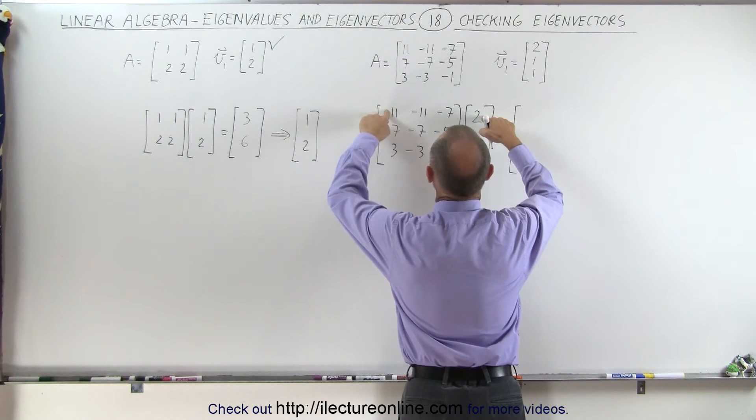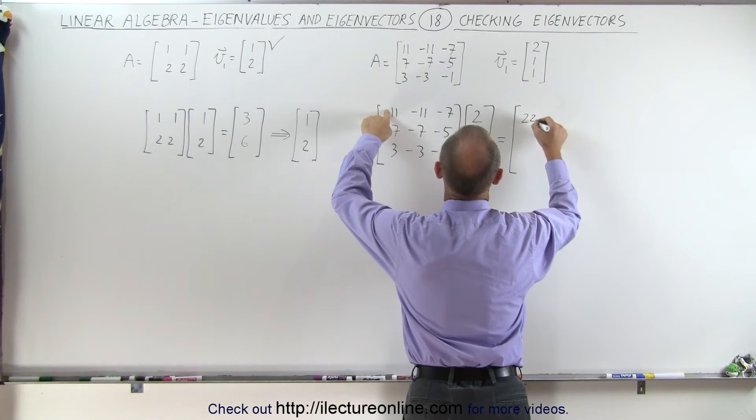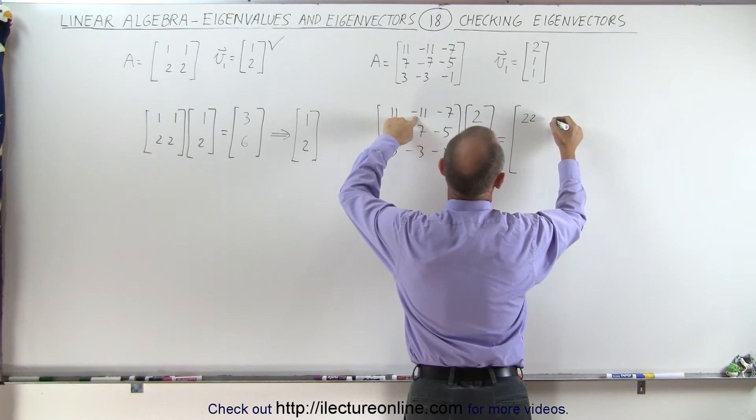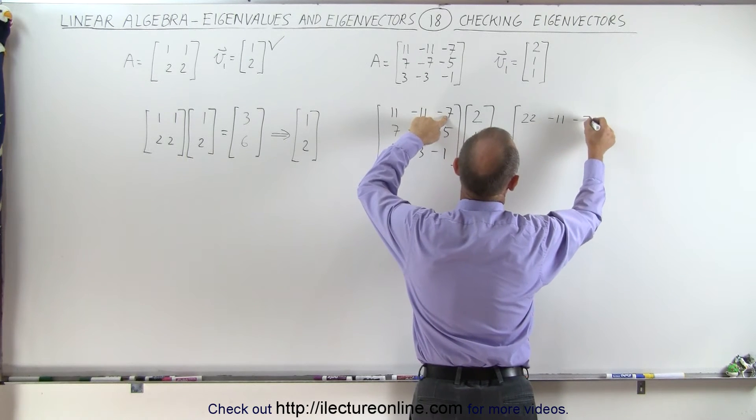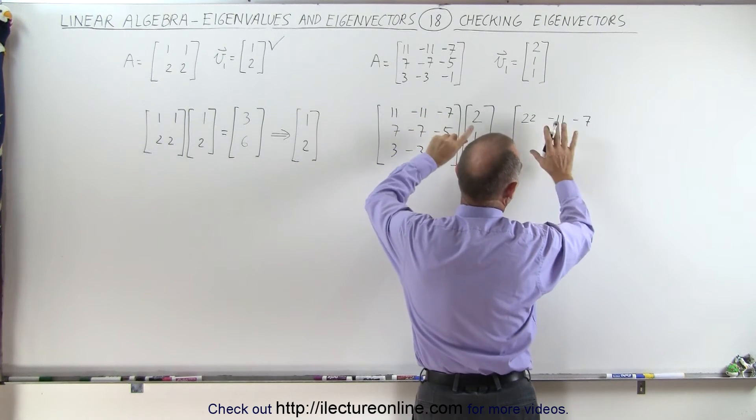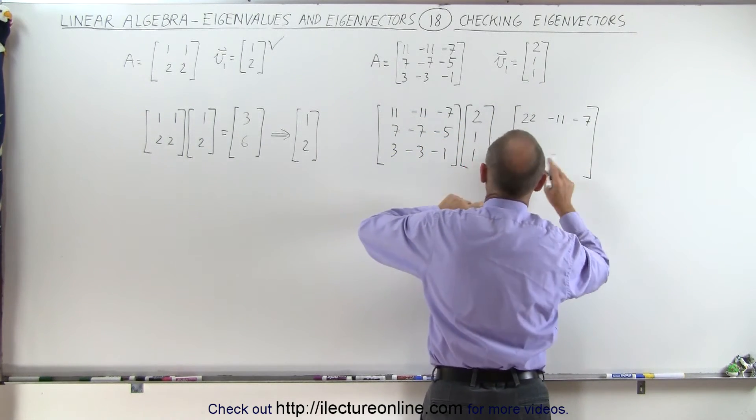So we have 11 times 2 which is 22, 11 times minus 11 times 1 is minus 11, and minus 7 and minus 7. So that's all one single element. I just want to write it down so you can see it. That's one element.